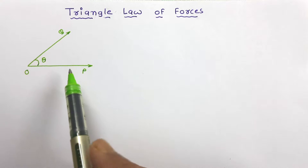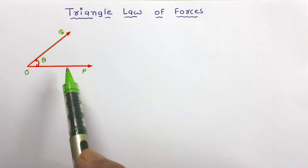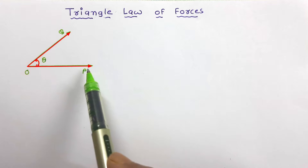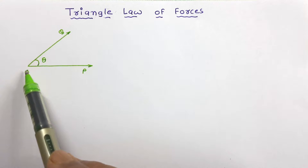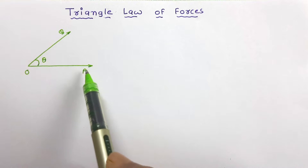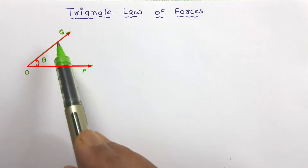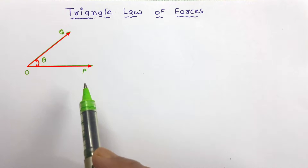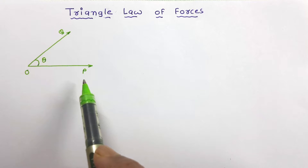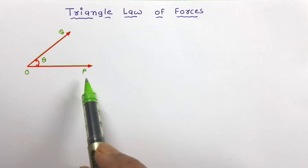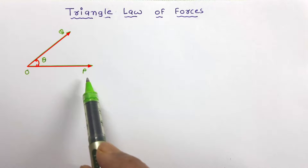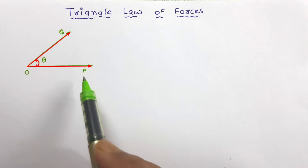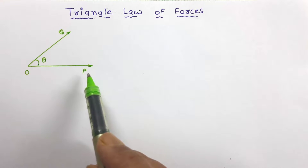Let us try to understand the triangle law of forces. When two such forces are given on any particle, and if we represent these two forces by two sides of a triangle with their magnitude and direction taken in order, we can determine the resultant by the third side of the triangle taken in opposite order. Let us draw it and understand.